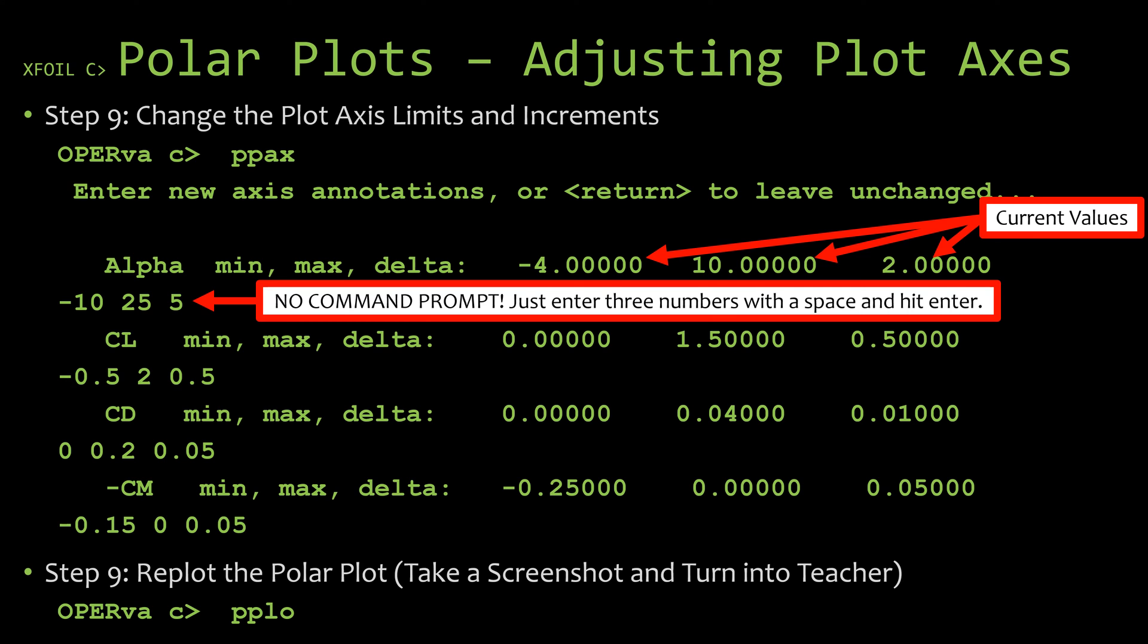So the command that you use to adjust the axes limits is the PPax command. Polar plot axes command is what I believe that stands for. This plot is going to give you the option of changing the minimum, maximum, and the increment value for the four different axes. The first of which is the angle of attack axis. Now it will actually prompt you and show you what the current values are so that you have a good idea of how you need to tweak them.